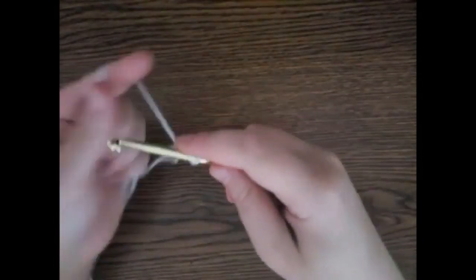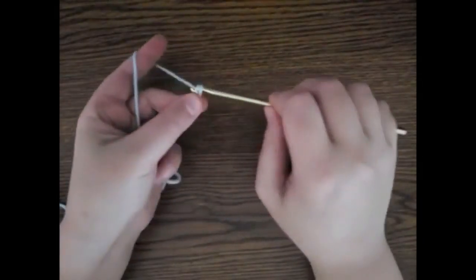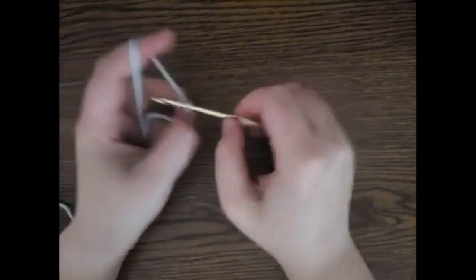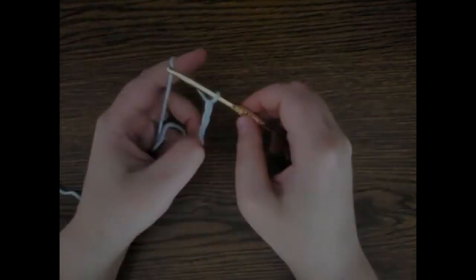When I am crocheting, I twist my wrist to catch the yarn and move it where I want it to go. This is important to mention because it may look like I am twisting my hook with my fingers, but I am actually using my wrist.